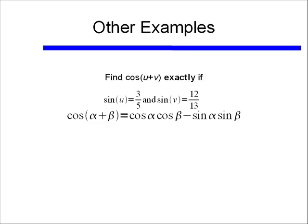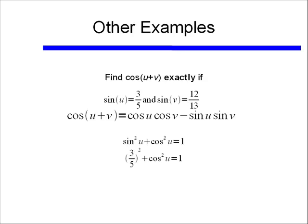There are two different ways we can solve this. We know we need to use our cosine sum identity, and we'll need to find what cosine of u and cosine of v are. Well let's first look at cosine of u. Using our Pythagorean identity — sine squared of u plus cosine squared of u is equal to 1 — we know sine of u is 3 over 5. If I square that and add it to cosine squared u, that should equal 1.